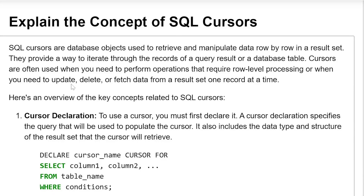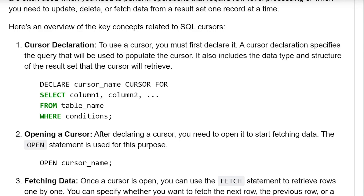SQL Cursors are database objects used to retrieve and manipulate data row by row in a result set. They provide a way to iterate through the records of a query result or a database table. Cursors are often used when you need to perform operations that require row-level processing, or when you need to update, delete, or fetch data from a result set one record at a time. Here is an overview of the key concepts related to SQL Cursors.